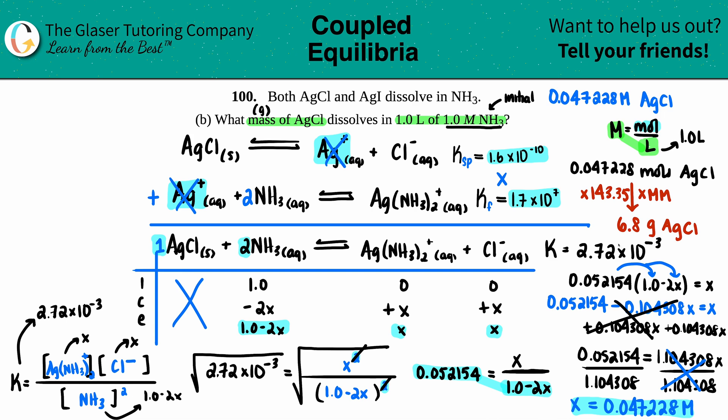6.8 grams of AgCl is going to precipitate, and that's the final answer. Okay, what'd you think? I really hope this helps. Let me know in the comments, subscribe to the channel, and I hope you all are having a great day. Let's keep studying hard and I'll talk to you later. Bye bye.